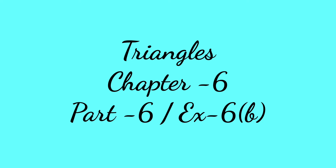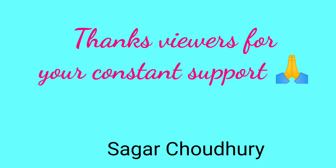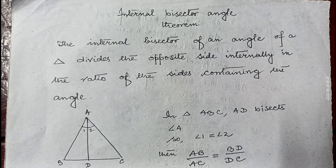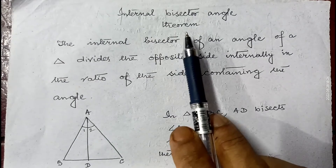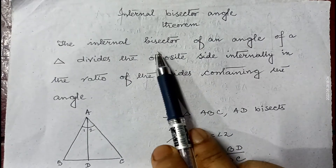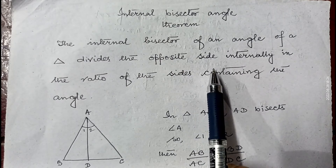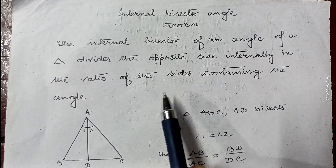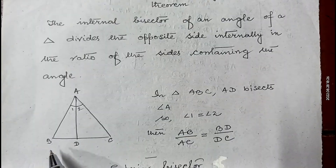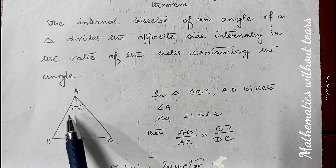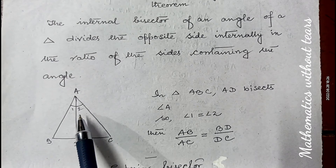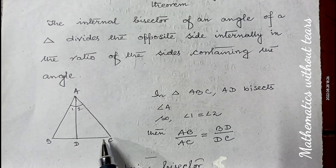Hello students. In my previous video I completed sums of 6A from class 10 chapter 6, and today I am starting 6B. Sums of 6B are based on two theorems called the Angle Bisector Theorem and the Internal Bisector Angle Theorem. According to this theorem, the internal bisector of an angle of a triangle divides the opposite side internally in the ratio of the sides containing the angle. Suppose ABC is a triangle in which AD is the bisector of angle A, so angle 1 equals angle 2.